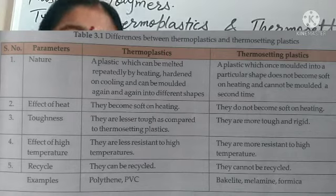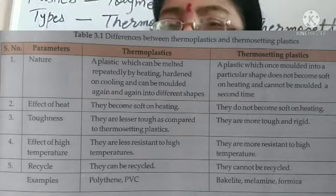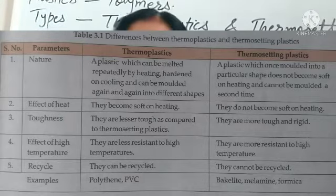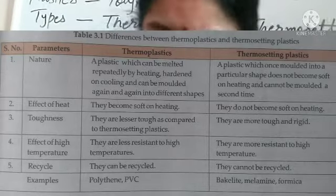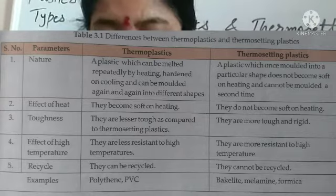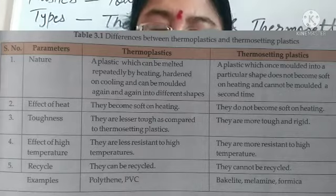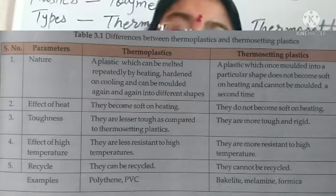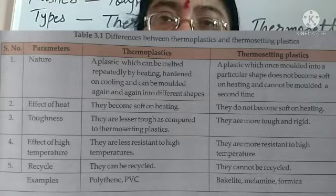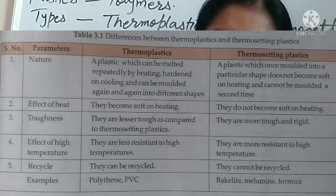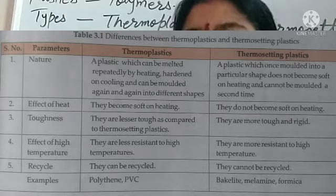In this table, you can understand the differences between these two types of plastics. First, we have the parameter of nature. Thermoplastics can be melted by heating, hardened on cooling, and can be molded again and again into different shapes. Thermosetting plastic, once molded into a particular shape, does not become soft on heating and cannot be molded a second time.